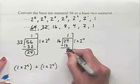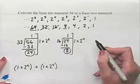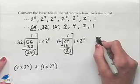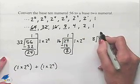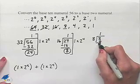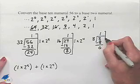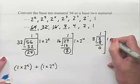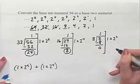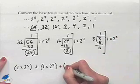We take our remainder of 8 and we move down to the next power of 2. 8 divided by 8 one time with a remainder of 0. This tells us that we have 1 times 2 to the 3rd power as part of our expansion. We'll write that down.